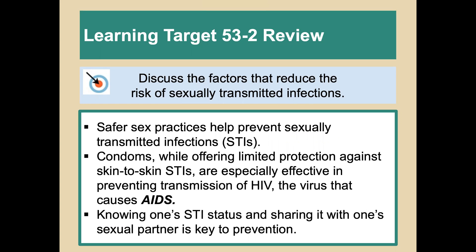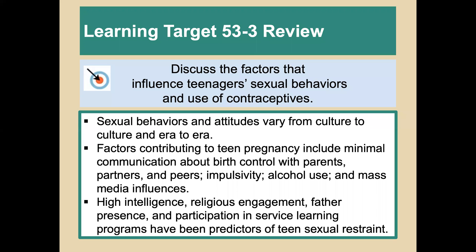Safer sex practices can help prevent sexually transmitted infections. Condoms, while offering limited protection against skin-to-skin STIs, are quite effective — though not fully — in preventing HIV, the virus that causes AIDS. Knowing one's STI status and sharing it with one's sexual partner is key to prevention. Sexual behaviors and attitudes vary from culture to culture and era to era. Factors contributing to teen pregnancy include minimal communication about birth control with parents, partners, and peers, impulsivity, alcohol use, and mass media influence. High intelligence, religious engagement, father presence, and participation in service learning programs have been predictors of teen sexual restraint.